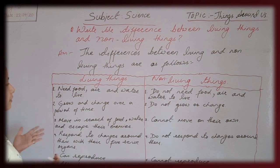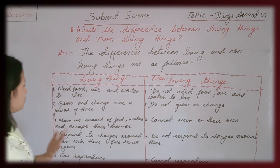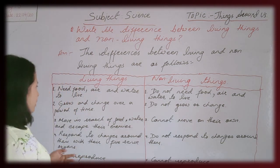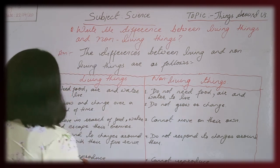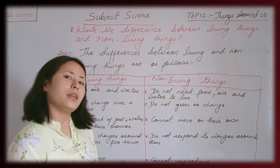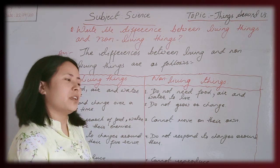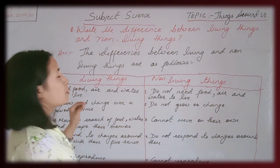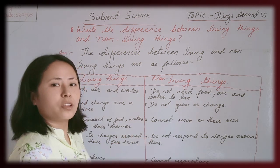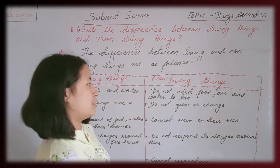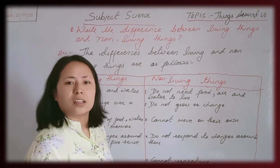Number two: grow and change. Living things grow and change over a period of time. Whatever is a living thing grows according to time. For example, look at yourself — you didn't come straight to class two, first you went to nursery, then LKG, UKG, then class one, two. That's how living things grow over time. Plants also grow. Non-living things do not grow — they stay the same however long they exist.